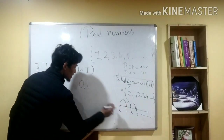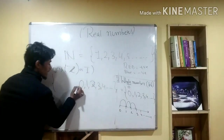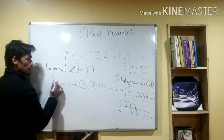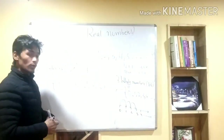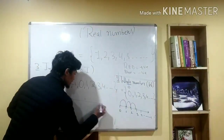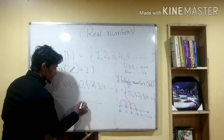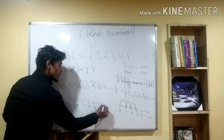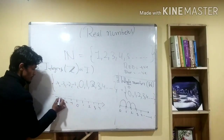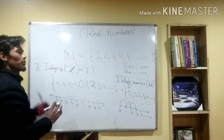In the integer system, you write: zero, one, two, three, four, up to positive infinity. And also zero, negative one, negative two, negative three, negative four — going to negative infinity. That is how the integers go.